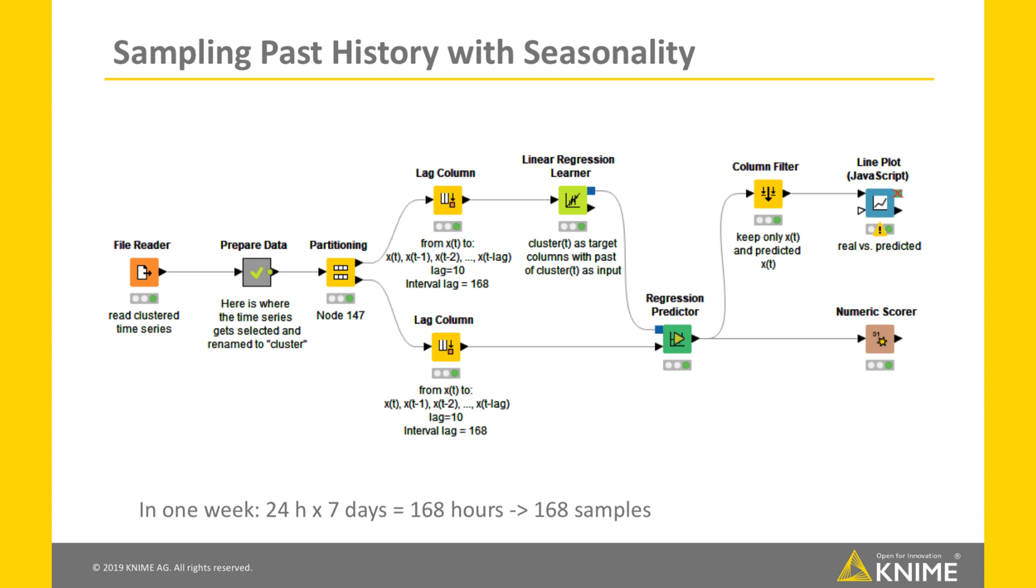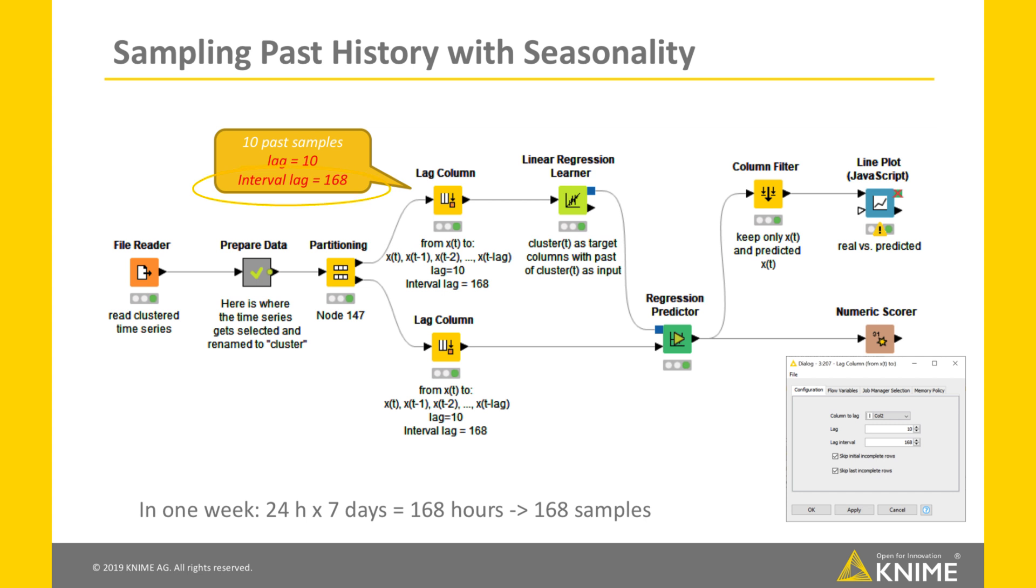Let's use, for example, a vector of 10 past samples. But this time, we use samples from the past 10 weeks, once a week. This can be obtained by setting Lag equals 10 and Lag Interval equals 24 times 7 equals 168, where 168 is the number of hours in one week.